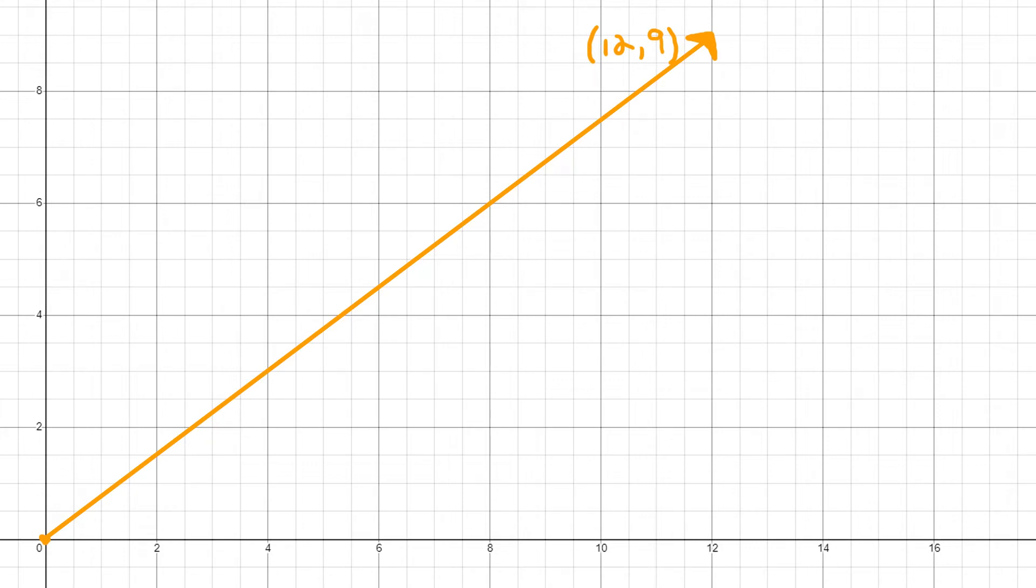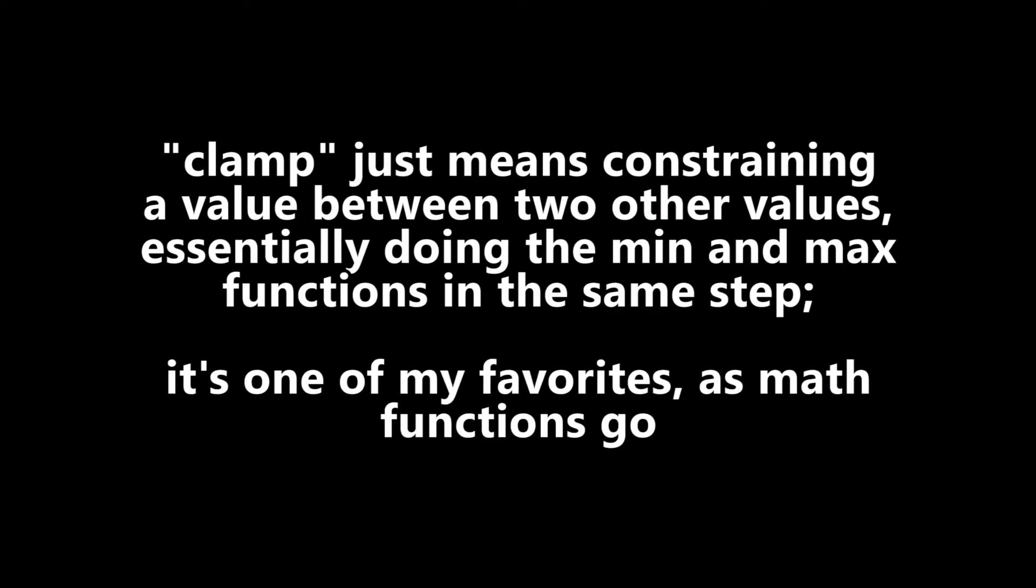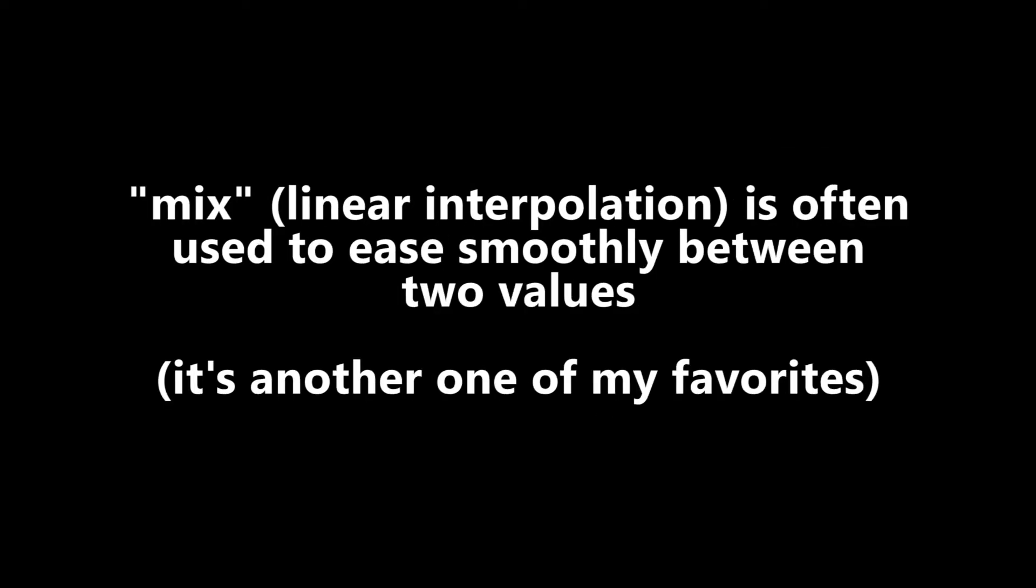Another thing you can do with vectors the same way that you can do with scalar values is pass them to functions. This is another thing that you've probably done many times if you've ever written any shader code at any point. There are some mathematical operations that you can do on vectors that are pretty much directly corresponding to operations that you can do on scalar numbers. So for example, you can take the minimum and maximum of a vector. It will evaluate the minimum and maximum of each of the components. Other common mathematical functions include clamp, which is essentially taking the minimum and maximum at the same time, so it constrains a value between two other values. In GLSL ES there is the mix function, which is essentially linear interpolation or the lerp function that you can use to have a vector value transition between two other values.